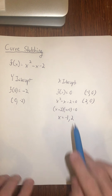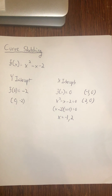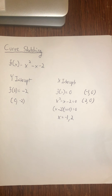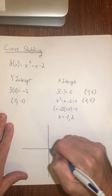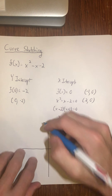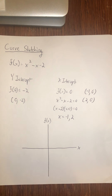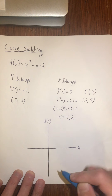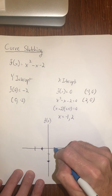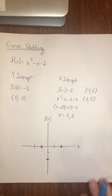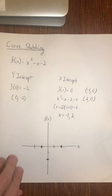If it didn't factor neatly, we'd use the TI-89 to find the zeros — you should know how to use the solve function to find zeros on your calculator. Now I'm going to plot those three points: (0, -2), (-1, 0), and (2, 0). This is a sketch — it's not perfect — but I've got three points so far.